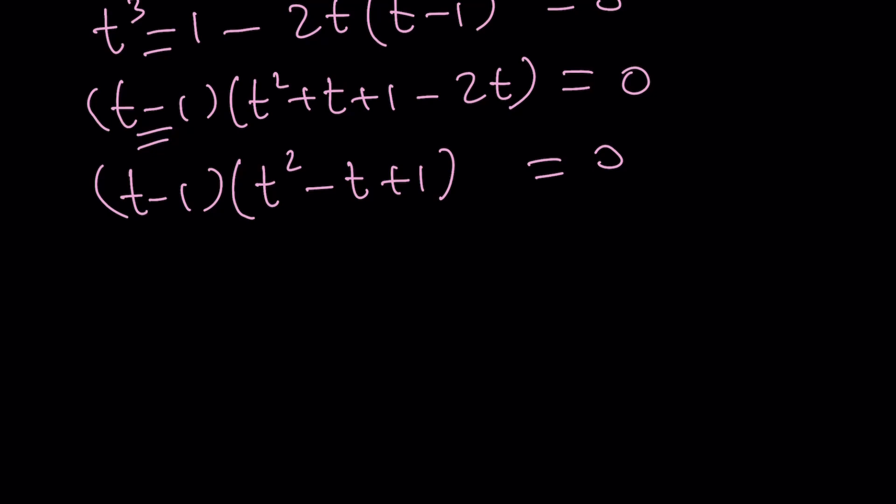And guess what? First factor gives us t = 1 right away, which means x, y, z can all be 1, but that's just one of the values. The second equation, which is the quadratic, gives us interesting stuff. Actually, if you solve it using the quadratic formula, you're going to get (1 ± √3i)/2. And guess what these are? These are actually complex cube roots of -1.